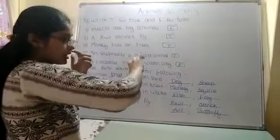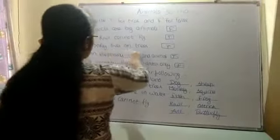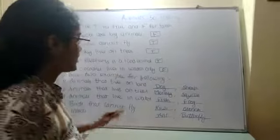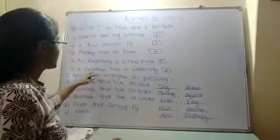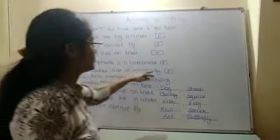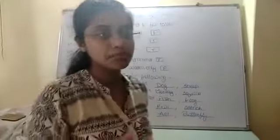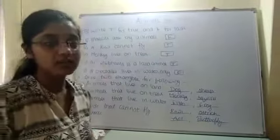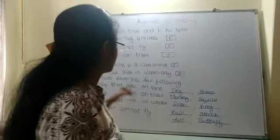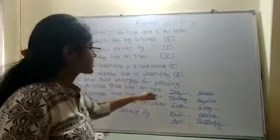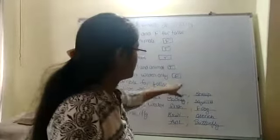Kiwi cannot fly — true. Monkey lives on a tree — true. An elephant is a land animal — true. Crocodile lives only in water — false, because crocodiles live in both water and land.